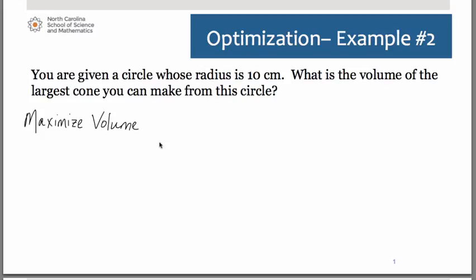Wanting then to maximize the volume of this cone, recall that the formula for volume of a cone is one-third π r² h.